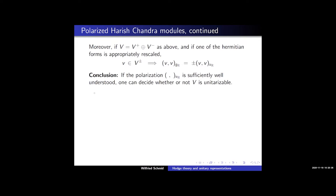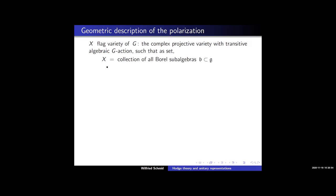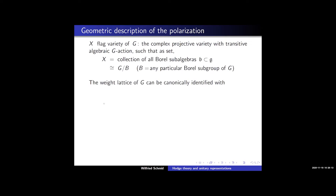Now let me describe the polarization geometrically. Suppose X is the flag variety of G — the complex projective variety with transitive algebraic G-action, which as a set is the collection of all Borel subalgebras, and therefore can be identified with G mod B, the homogeneous space where B is any particular Borel subgroup. The weight lattice of G — the lattice of characters of B — can be naturally identified with the group of G-equivariant algebraic line bundles on the flag variety, denoted Λ. I denote by λ the weight corresponding to the line bundle L_λ.